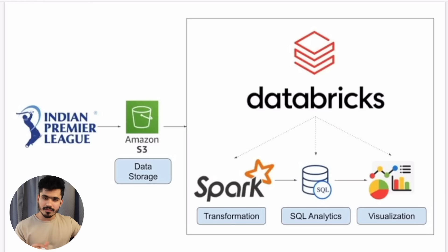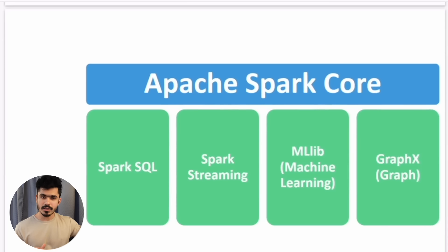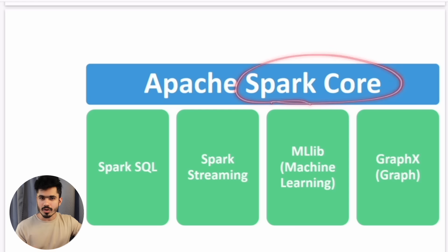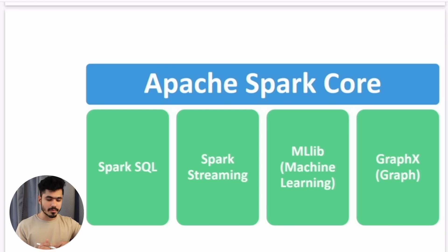This is the architecture diagram — you can refer to it anytime. I want to start and give you an understanding of the entire Apache Spark ecosystem. So one is the Spark core, which is the heart of Apache Spark, responsible for executing every code that you submit to an Apache Spark application. Don't worry about it right now — just understand the components.